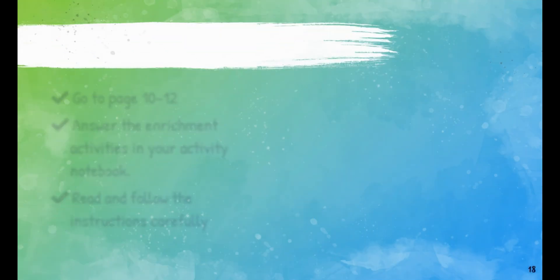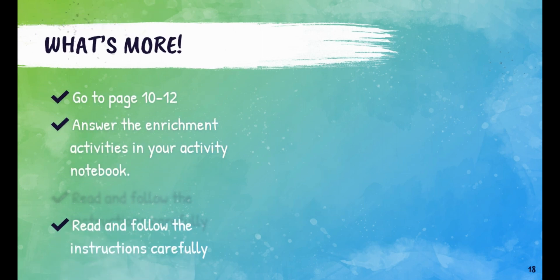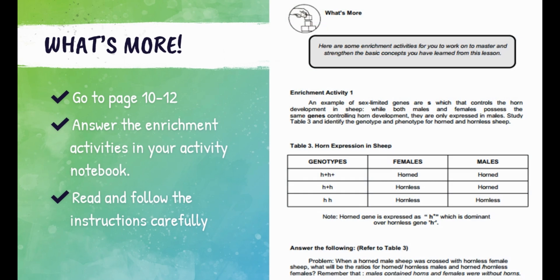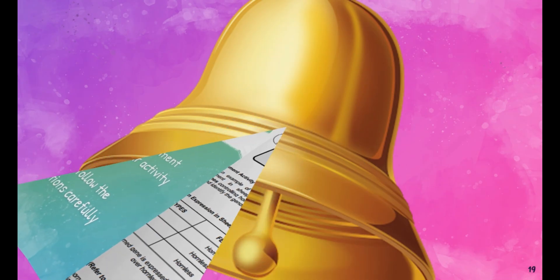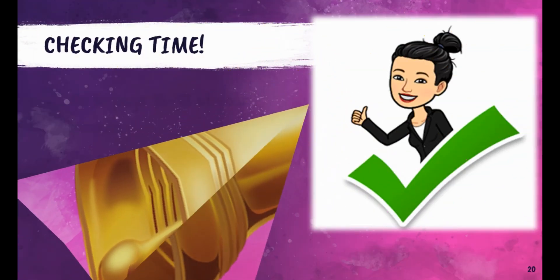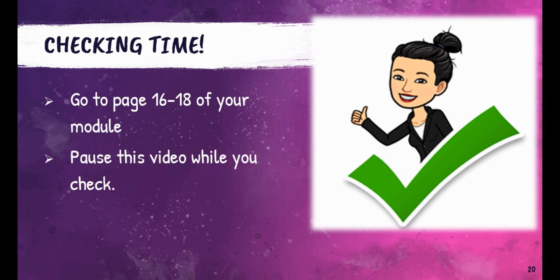Let's have more activities to help you master and strengthen the basic concepts of this lesson. Go to pages 10 to 12 and answer the enrichment activities in your notebook. Read and follow the instructions carefully. Were you able to answer all items? Great! Let's see how you did — go to pages 16 to 18 of your module and pause this video while you check your work.